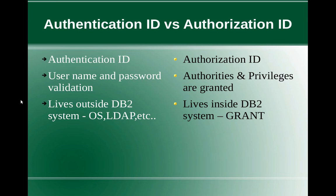An authentication ID will be used for username and password validation. So what happens is for a particular username, this is the password — that kind of validation will happen on an authentication ID. Once a user is authenticated, then for that particular user, an authorization ID will be assigned. That authorization ID will be used for authorities and privileges granted on the database based on the authorization ID.